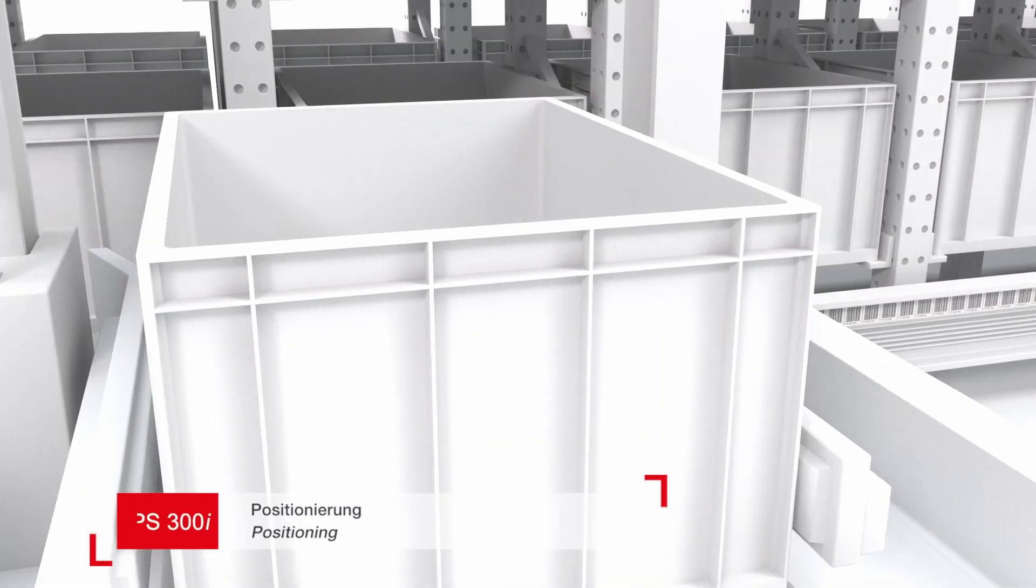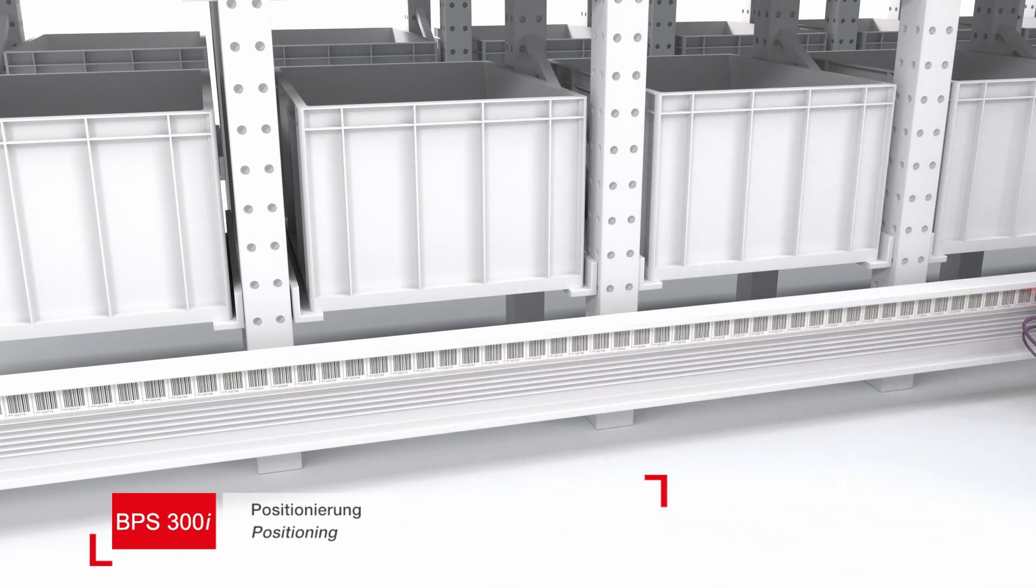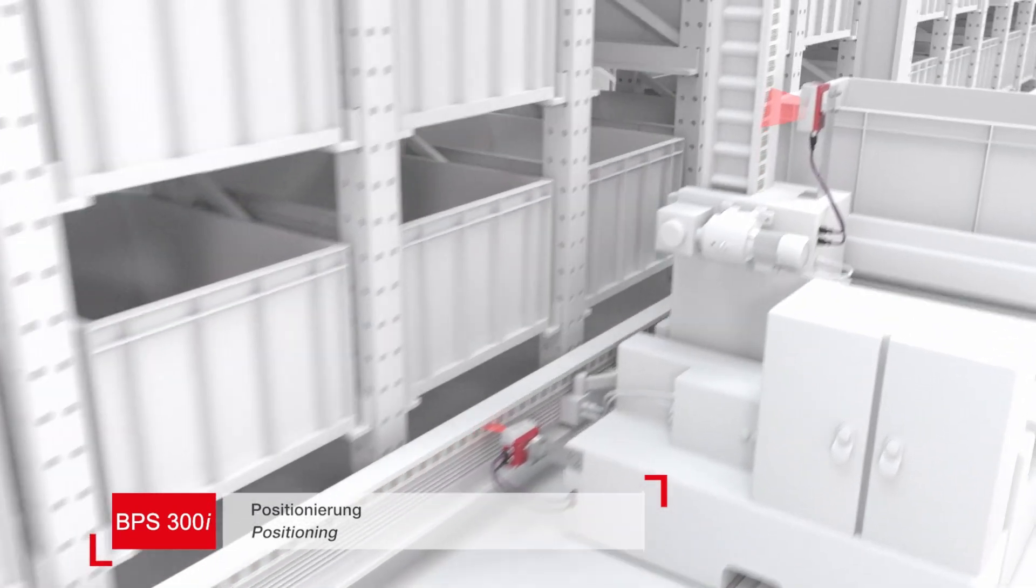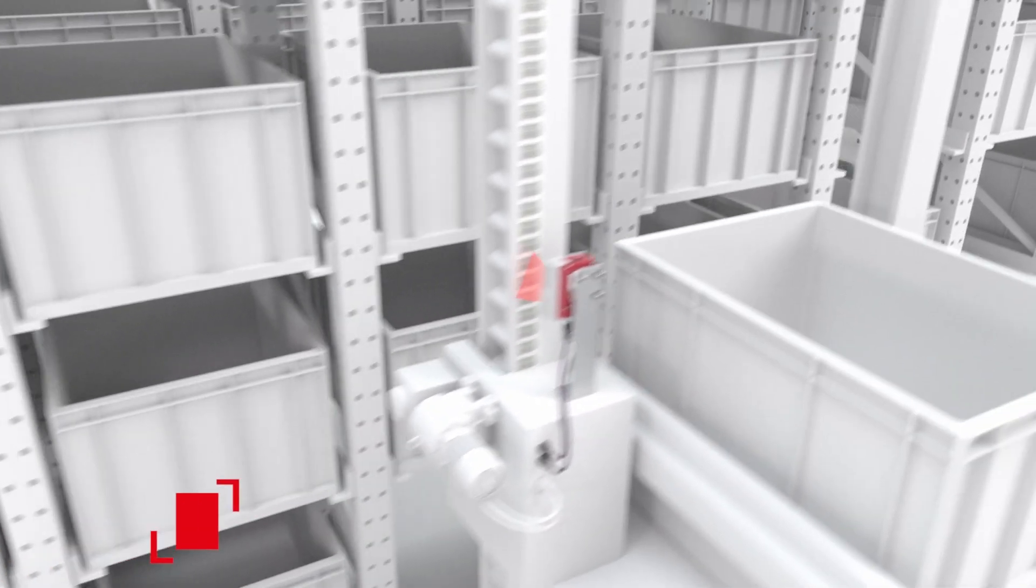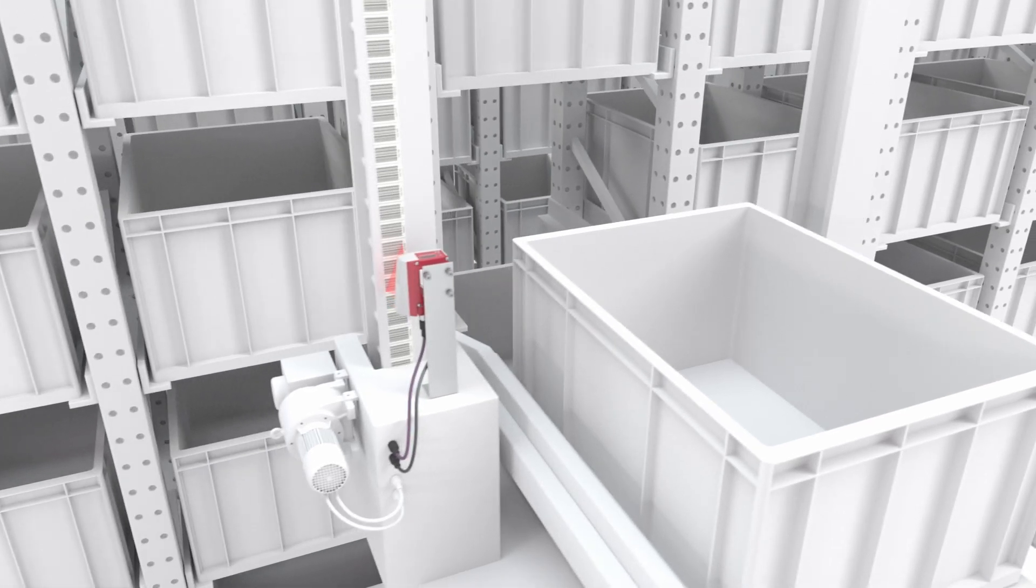Precise positioning in X and Y direction is provided by the barcode positioning system. It determines the position based on the position information attached to the barcode tape.